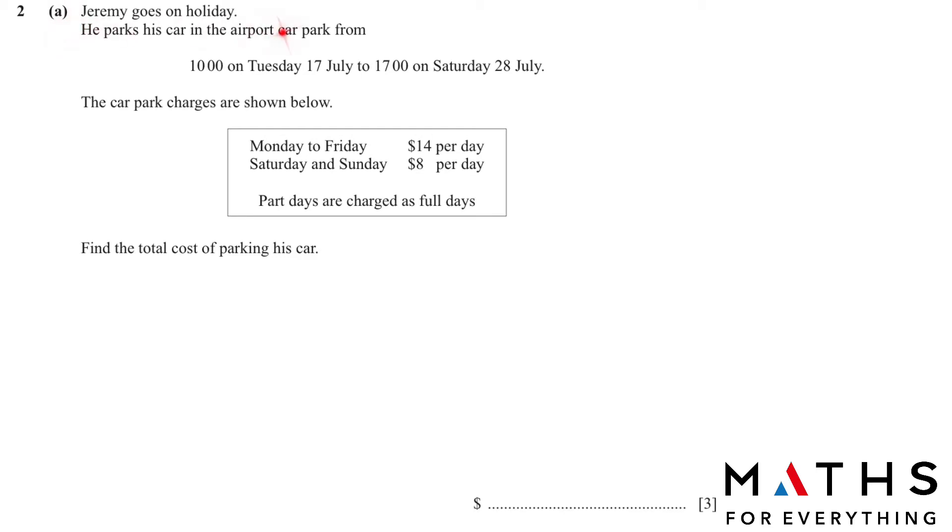Question number 2a. Jeremy goes on a holiday. He parks his car in the airport car park from 10 o'clock on Tuesday 17 July to 17 hours on Saturday 28 July. The car park charges are shown below: Monday to Friday $14 per day, Saturday and Sunday $8 per day. Part days are charged as full days. Find the total cost of parking. This is an easy question. He leaves his car on Tuesday 17 July till Saturday 28 July. The charges have been given to us. It's a 3 mark question. It's a very easy question. Just write down the dates from 17 July till Saturday 28 July, like this.